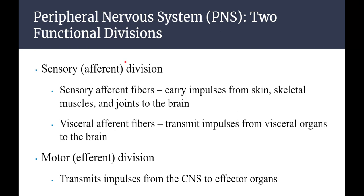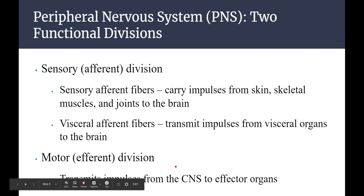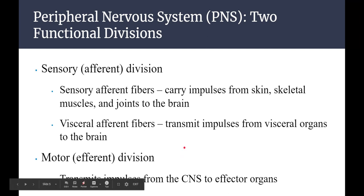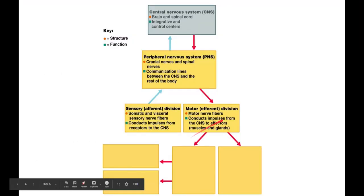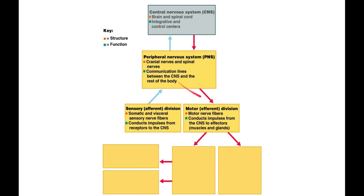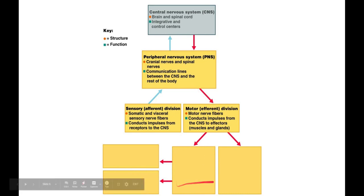Then you have the motor or efferent division. That transmits impulses from the central nervous system down to the effector organs. Think of efferent as getting away from the brain — they're heading down to the rest of the body. So the peripheral nervous system has these two different breakouts: the sensory division communicates back to the CNS, and from the CNS the motor division carries the response.